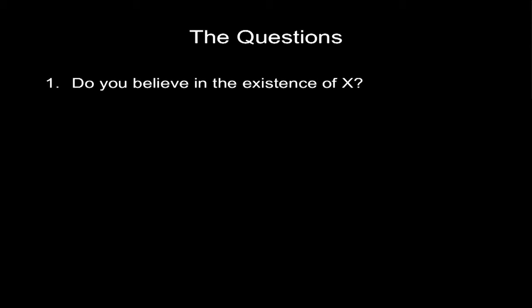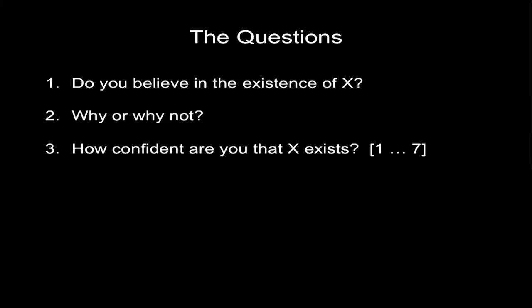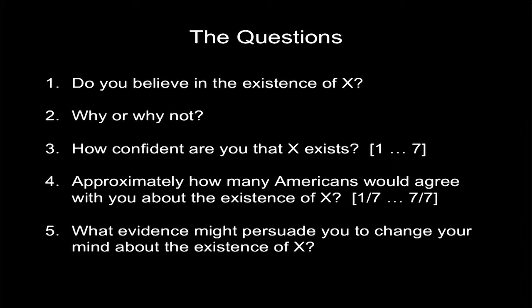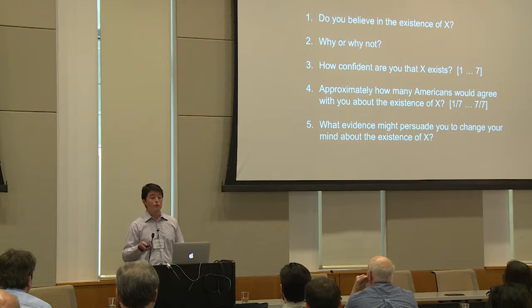Participants answered five questions about each entity. First, do you believe in the existence of the entity? Second, why or why not? — I'll refer to responses to this open-ended question as belief justifications. Third, how confident are you that the entity exists on a scale from one to seven, with one labeled 'not at all' and seven labeled '100%'? Fourth, approximately how many Americans would agree with you about the existence of the entity on a scale from one out of seven to seven out of seven Americans? And finally, what evidence might persuade you to change your mind? — I'll refer to those responses as belief refutations.